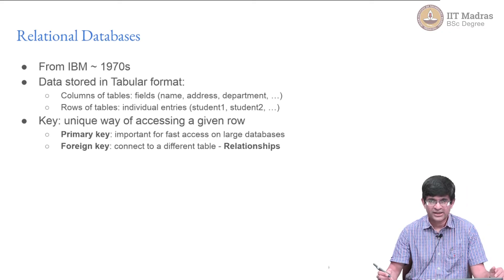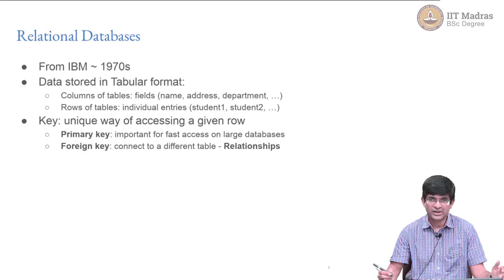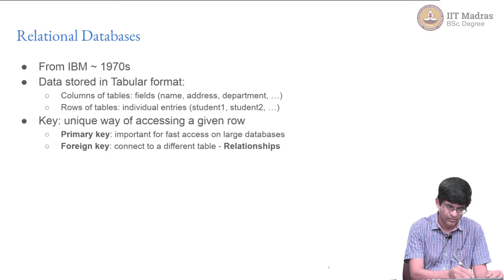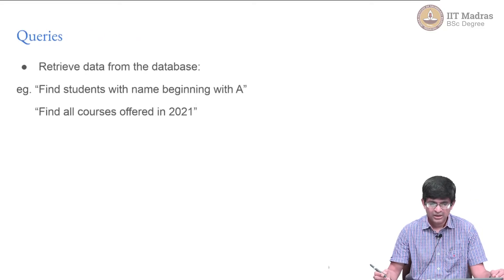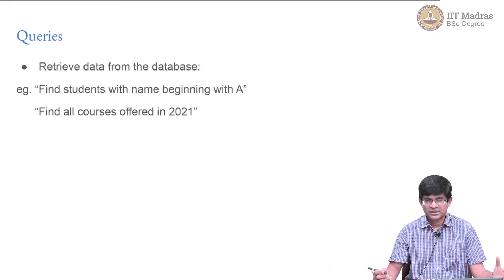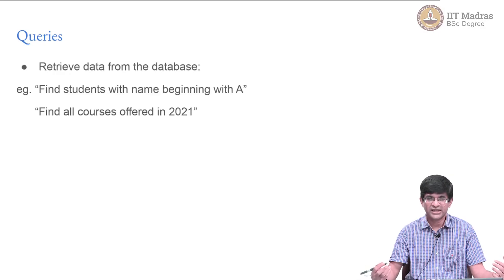Foreign keys, as we saw in the entity relationship diagrams, are used to connect to a different table. A foreign key indicates relationships between data in different tables. The database manages to store information and associates primary keys, foreign keys, and so on with the data.